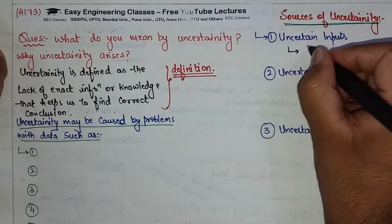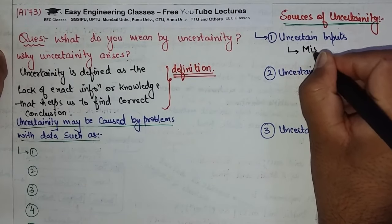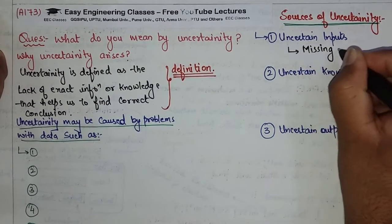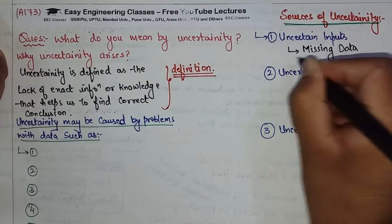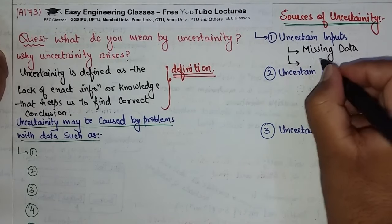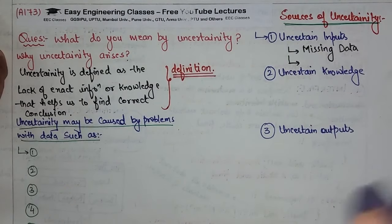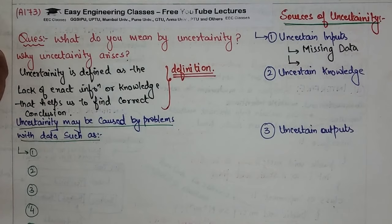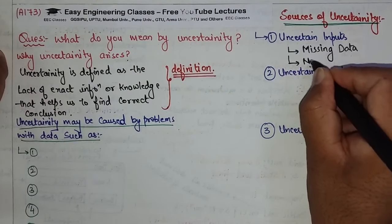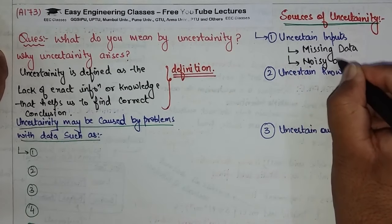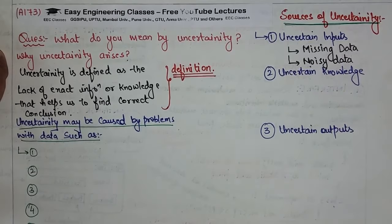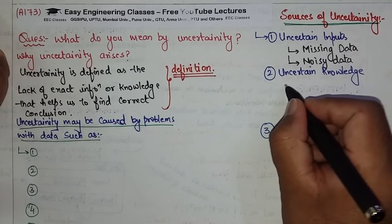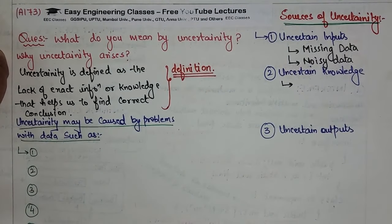Uncertain inputs basically refers to data — data that is missing. So we do not have all accurate information. We typically call this noisy data, which includes irrelevant details.